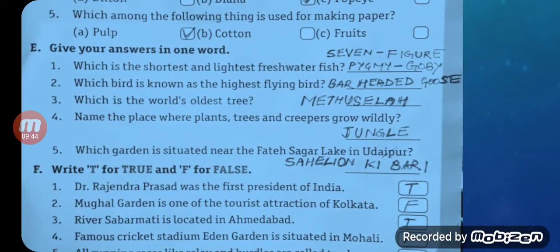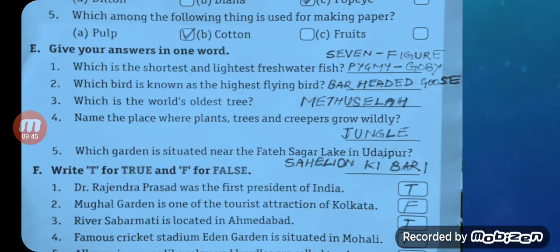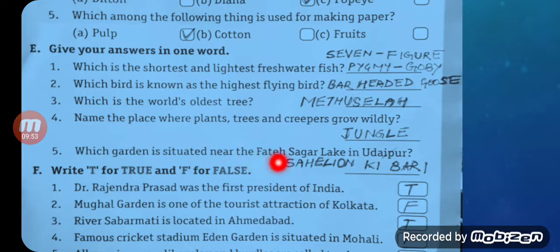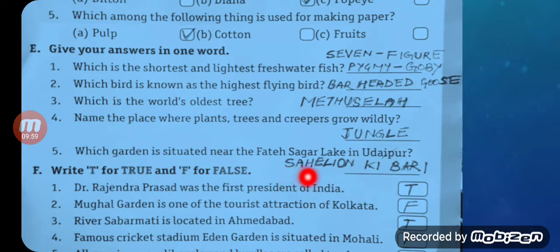Question number five: Which garden is situated near the Fateh Sagar Lake in Udaipur? The answer is Saheliyon ki Bari — S-A-H-E-L-I-Y-O-N K-I B-A-R-I.